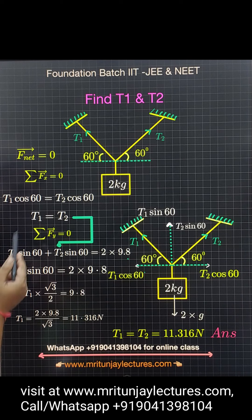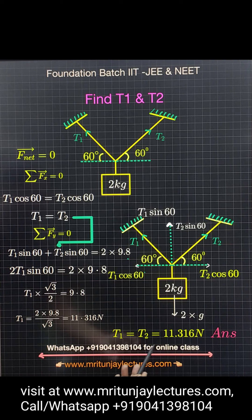11.316 Newtons. So T1 equals T2 equals 11.316 Newtons. That's the right answer.